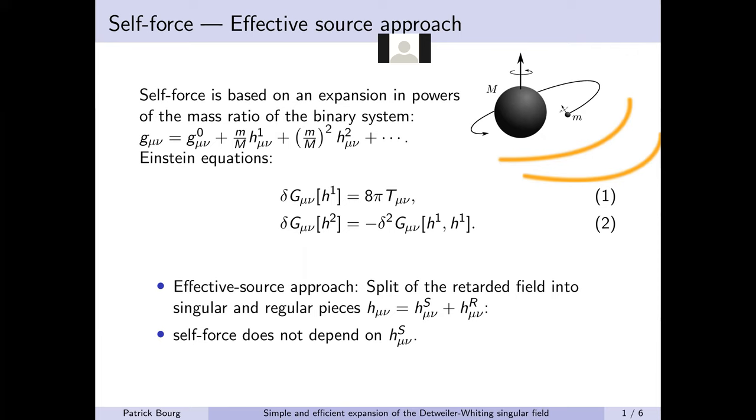This expansion transforms the field equations into a series of linear PDEs that are to solve for the metric perturbations, such as h1, h2, and so on. Perhaps the central difficulty in solving these equations is that the smaller mass compact object is modeled as a point particle.